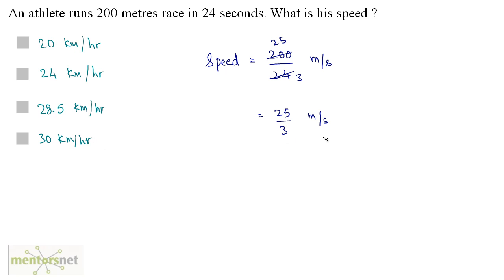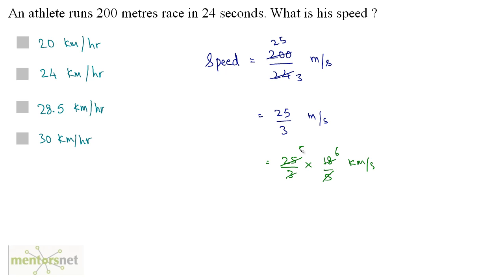So how do you convert meters per second into kilometers per hour? Just multiply it by 18 by 5. So you have 25 by 3 times 18 by 5 kilometers per hour. So 3 times 6 is 18, and 5 times 5 is 25, so 5 times 6 is 30. So 30 kilometers per hour is the speed of this athlete. Option D is the correct answer.